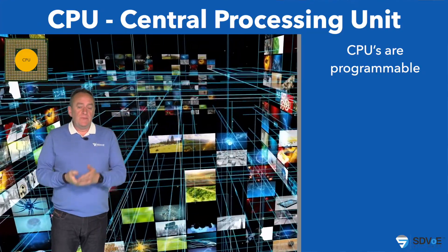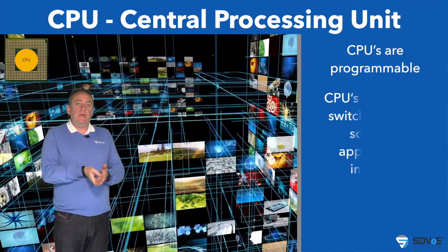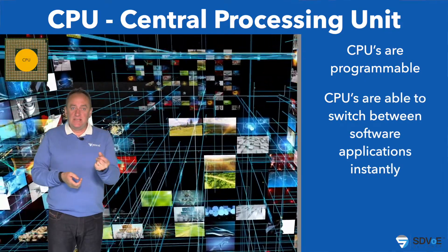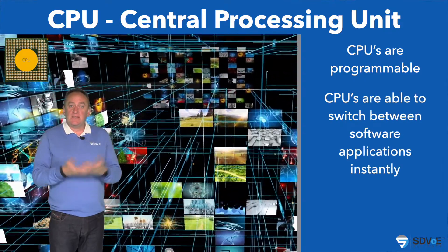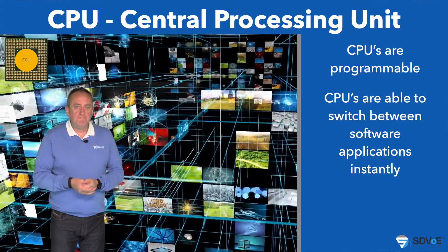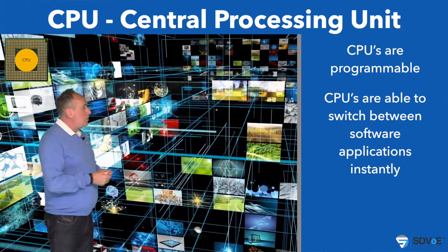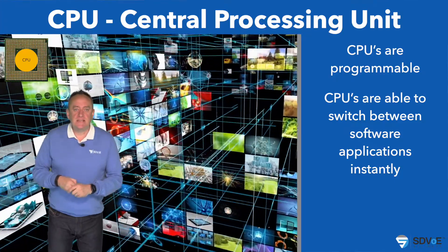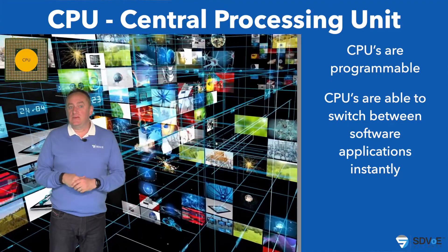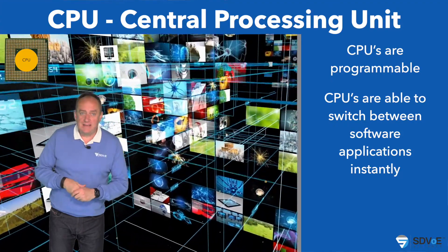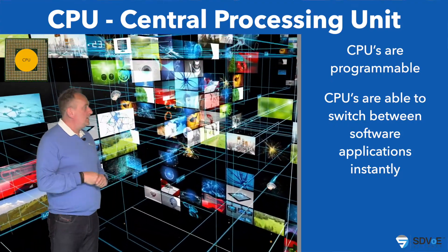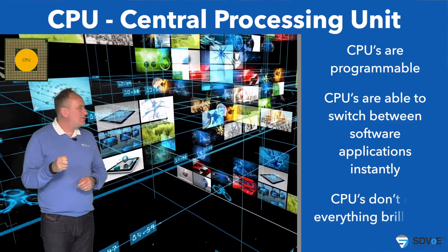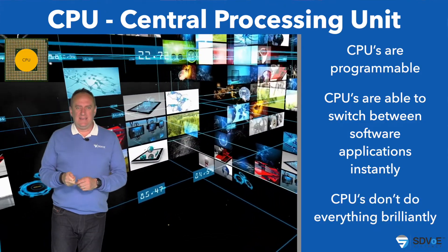More importantly it's able to switch between these software applications instantly, because that's what you expect from your computer, right? Computers do a vast array of different things and the CPU enables it to do exactly that. It just doesn't do these things brilliantly.